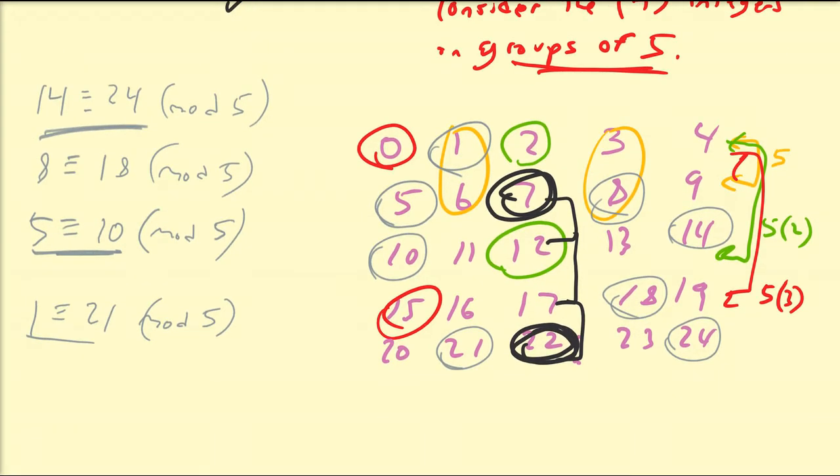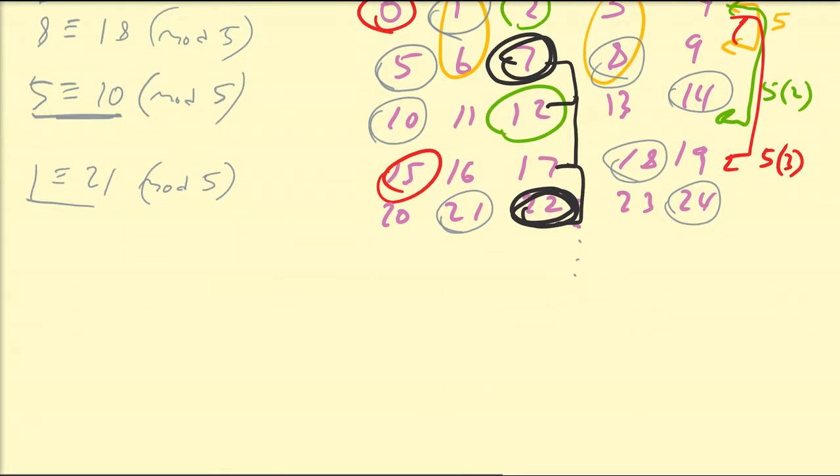And 21 minus 1 is 20, which is also divisible by 5. And you can do that argument for any two pairs of numbers that fall into the same exact column of grouping of integers of 5s. And that's going to be true if you continue this outwards. So let's consider another example. For example, arithmetic modulo 4.